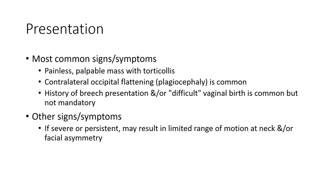Most common signs and symptoms: painless cervical mass with torticollis, contralateral occipital flattening. Plagiocephaly is common. A history of typical vaginal birth is common but not mandatory. Other signs and symptoms include cervical spine limitations in range of motion and facial asymmetry.